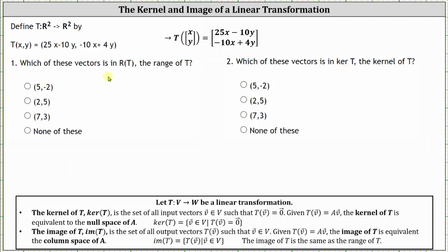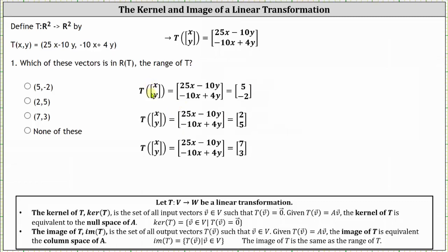Let's first determine whether any of the given vectors are in the range of T or the image of T. If they are, they'd have to be a possible output of the transformation T of xy. So we set T of xy equal to the vector (5, -2), T of xy equal to the vector (2, 5), and T of xy equal to the vector (7, 3). Using the formulas for the x and y components of the output vectors, we have a system of equations. If the system has a solution, the corresponding vector is in the range or image of T. If the system does not have a solution, the vector is not in the range or image of T.